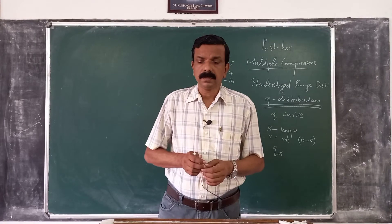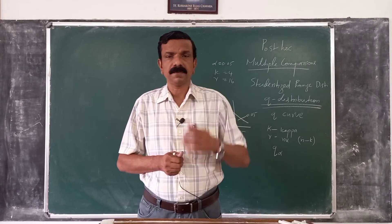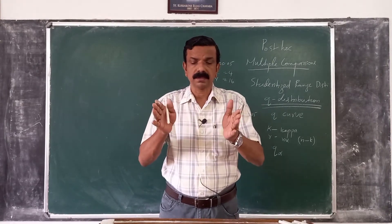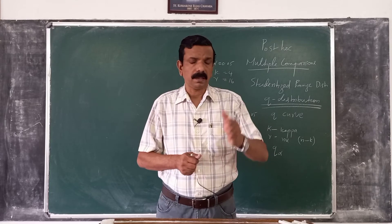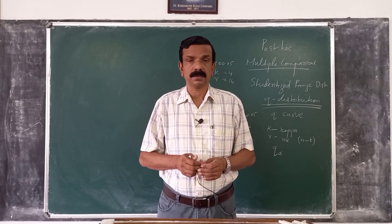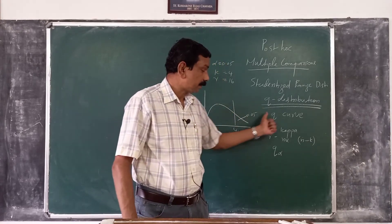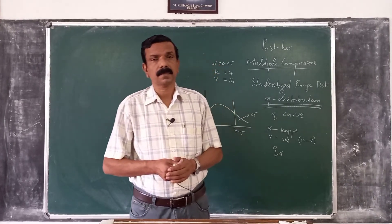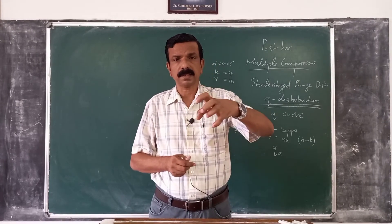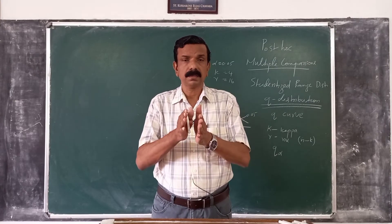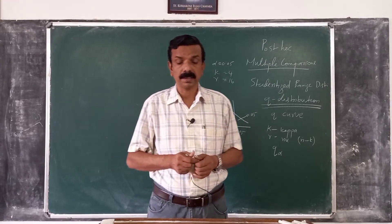The formula used in the Tukey multiple comparison method for obtaining a confidence interval for the difference between means is similar to confidence intervals in the context of t distribution. The only difference is that instead of critical t values, we use critical q values. The assumptions are: simple random samples, independent samples, normal populations, and equal standard deviations.